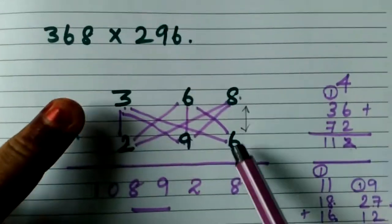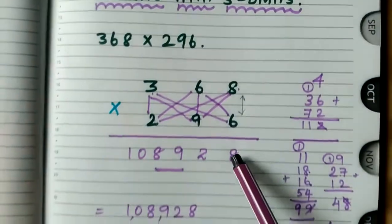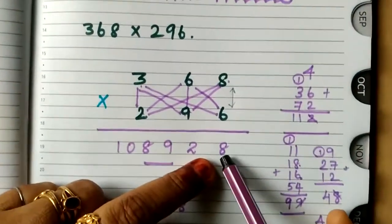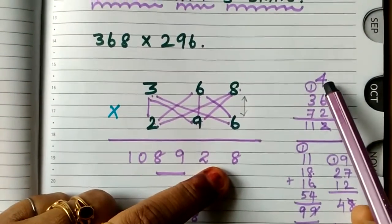So 8 and 6. 8 times 6 is 48. So 48, the ones value 8 will come here. 4 will be carried over.